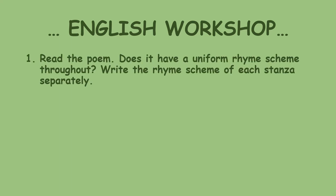Coming to the English workshop, the first question: read the poem. Does it have a uniform rhyme scheme throughout? Write the rhyme scheme of each stanza separately. For the first stanza, look at the last word in every line. The last words are 'would,' 'both,' 'stood,' 'could,' and 'undergrowth.' 'Would,' 'stood,' and 'could' are rhyming words, while 'both' and 'undergrowth' sound the same. Therefore, the rhyme scheme of the first stanza is A-B-A-A-B.